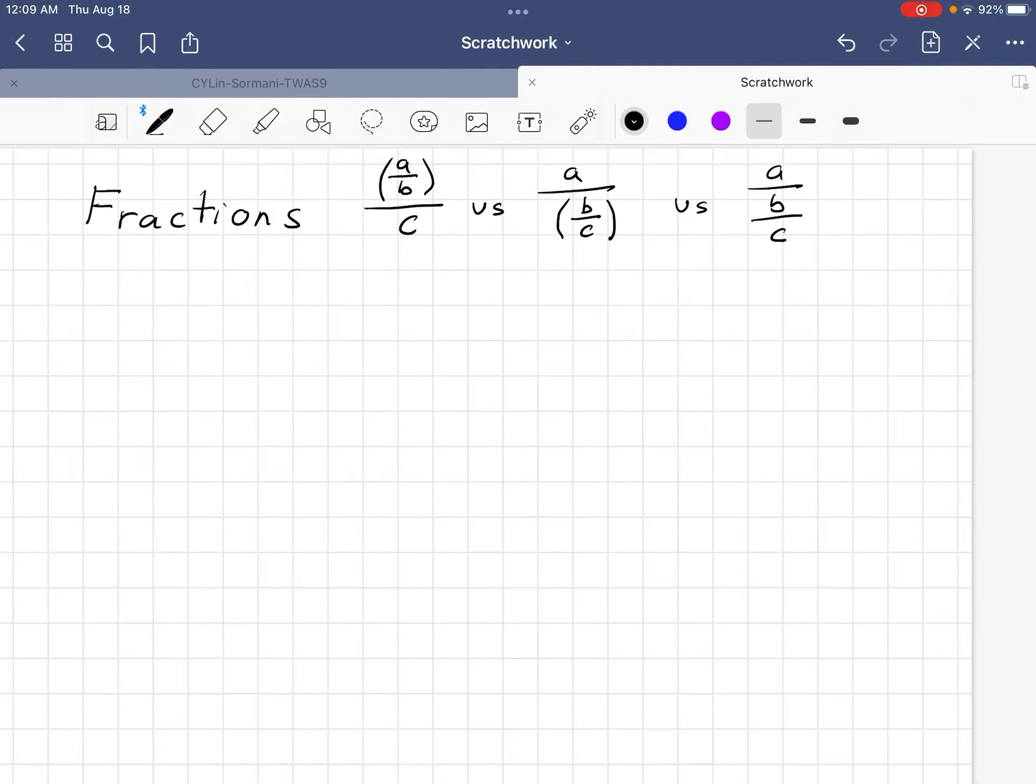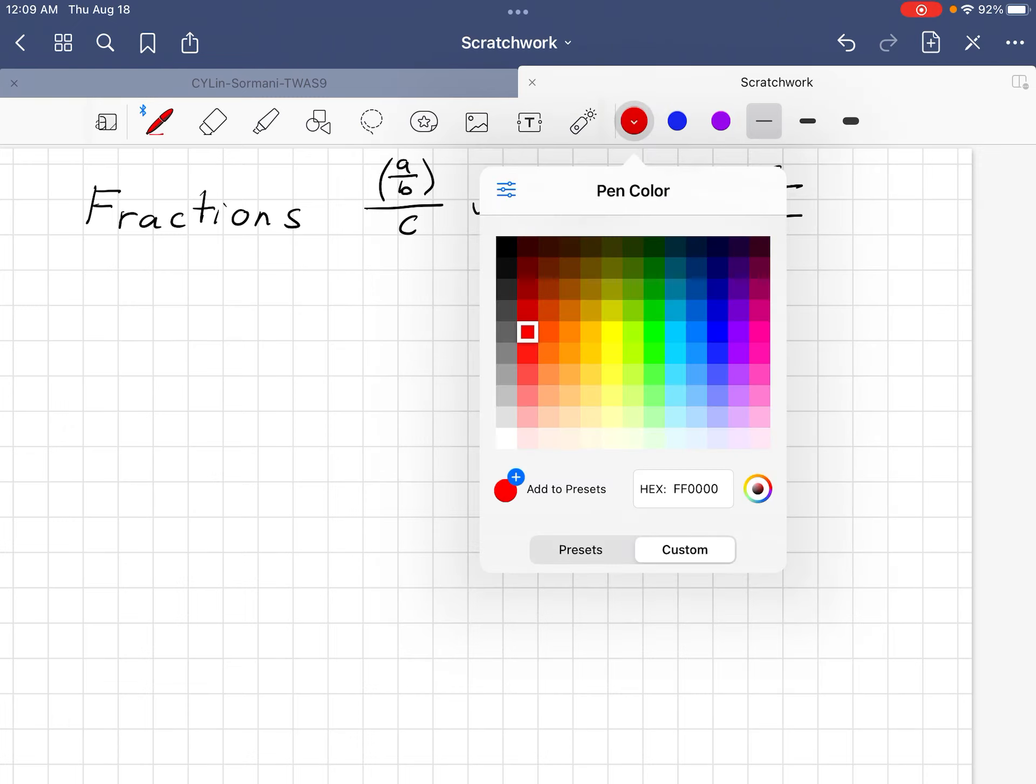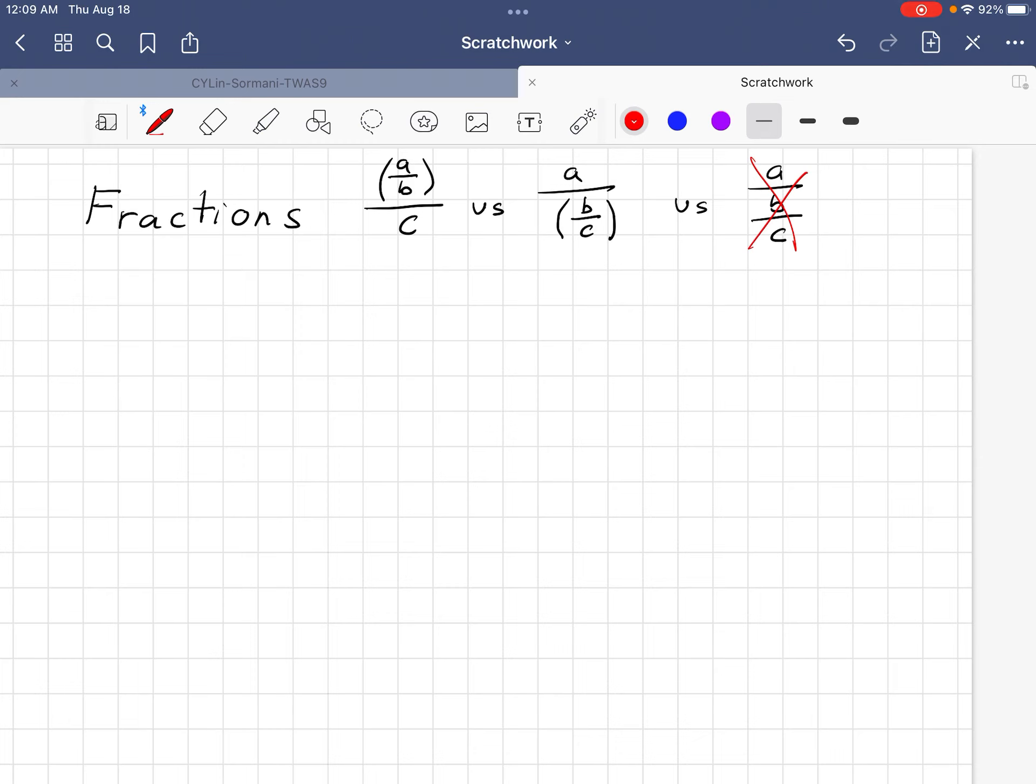Today, we're going to talk about fractions. We're going to talk about what it means to say A over B divided by C versus A divided by the fraction B divided by C, versus A over B over C. This last one is just completely wrong. This last one is wrong. This is not defined and means nothing.